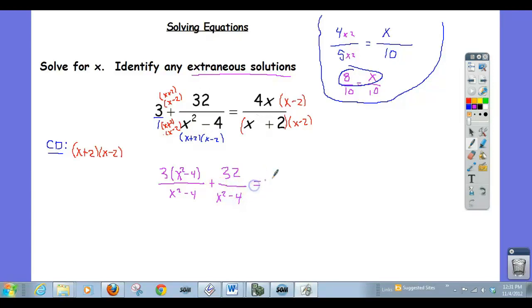And that equals 4x times x minus 2, divided by, actually, let's do this, x plus 2 times x minus 2 is, of course, x squared minus 4.